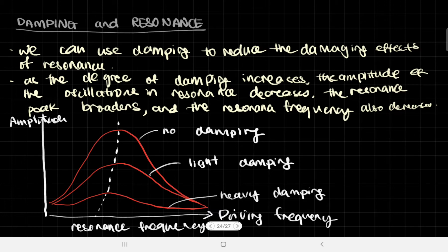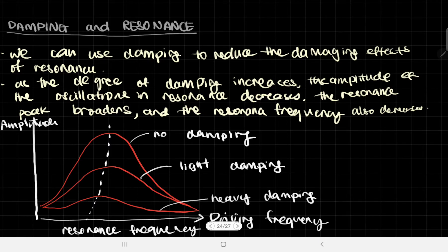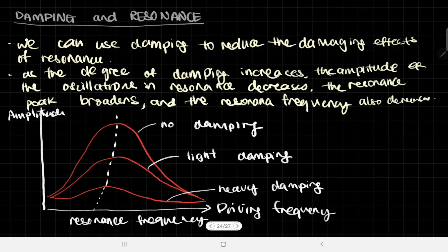We need some way to decrease the amount of resonance. The engineers handled it for that bridge by adding certain objects to the system to help dampen the oscillations. We can use damping to reduce the damaging effects of resonance. As the degree of damping increases, the amplitude of the oscillations at resonance will decrease. Also, the resonance peak would broaden.